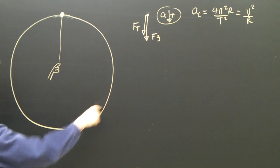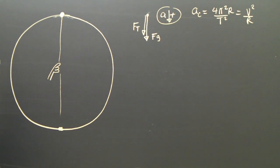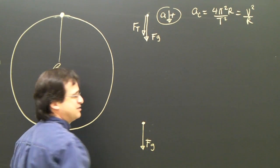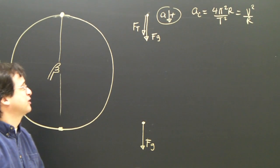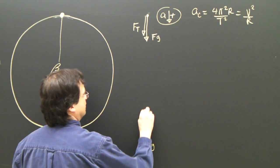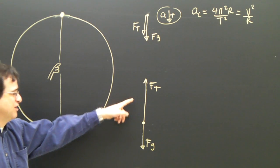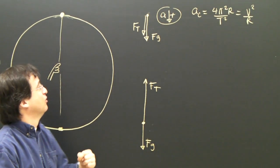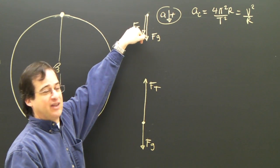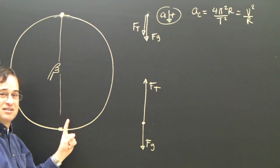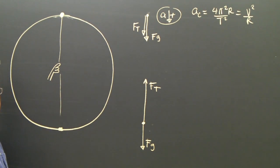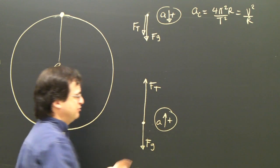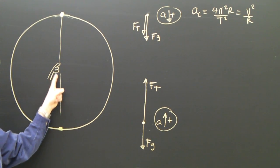Let's look at the bottom of the circle. When the rock gets down to the bottom and the string points upward, I'll draw a free body diagram there. Gravity acts downward, no surface, no friction, and there's tension pulling upward. I drew the tension bigger than gravity because centripetal force means there's got to be some net force towards the center of the circle to keep it going in that circle. At the bottom, the center is up, so I need excess force upward. The acceleration is upward and positive.